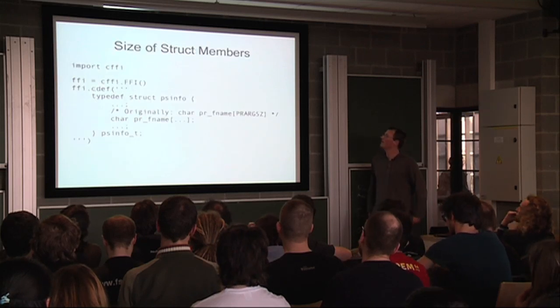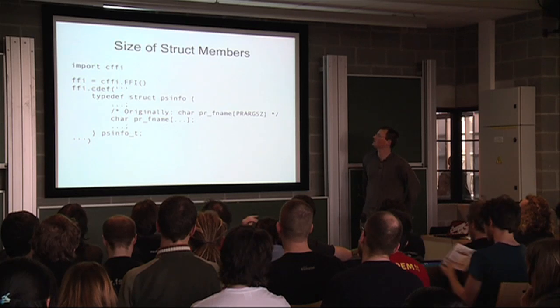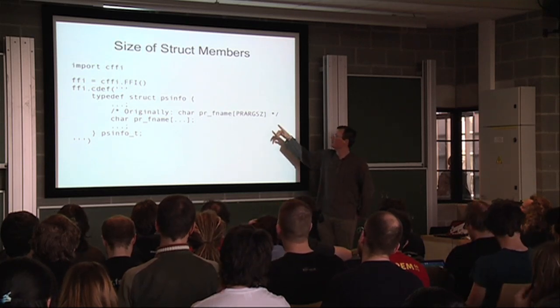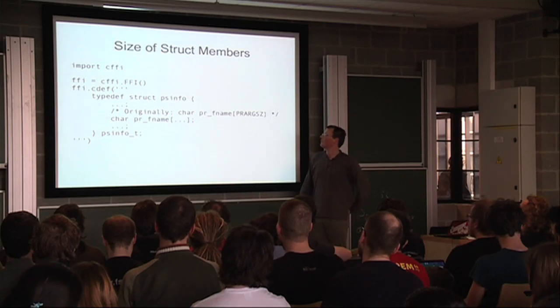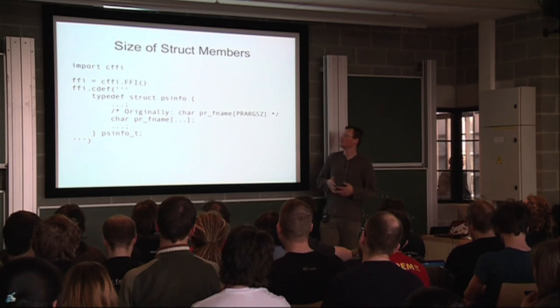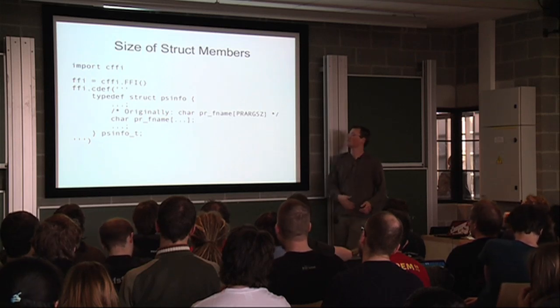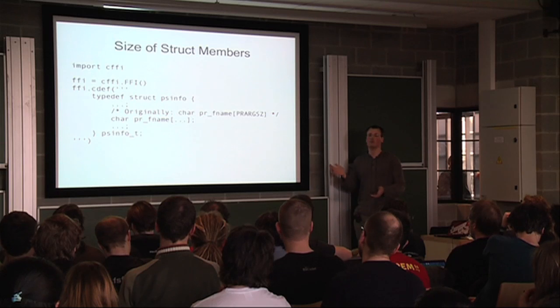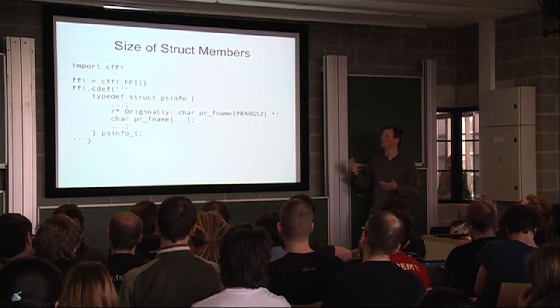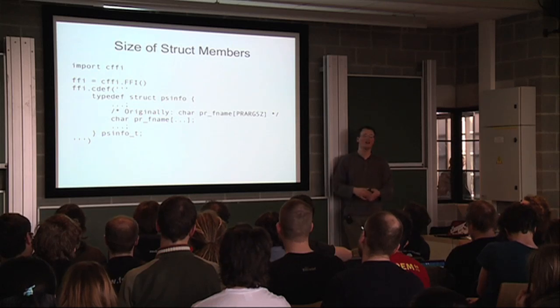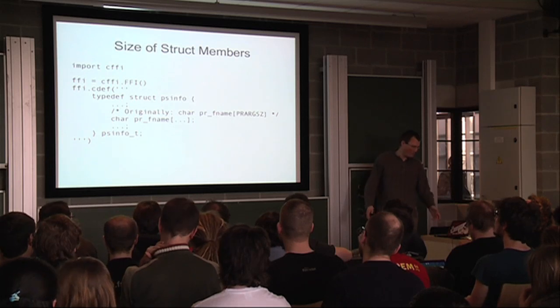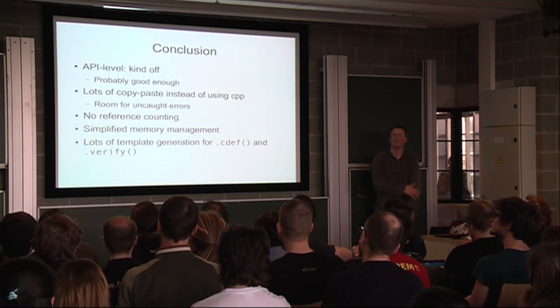Very quickly, second thing on structures is if you like, in this case, there's an example on Solaris I think, where there's a certain array of a string basically in the structure and it's declared as a certain size. Again, you don't have to worry about what the size is. CFFI will again use sizeof and figure out what the size is. So you never have to figure out what this macro that in the header files normally would be. So that's fairly nice alleviation.